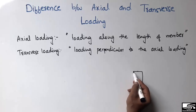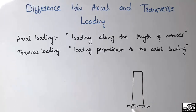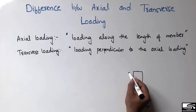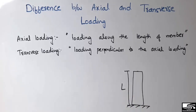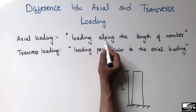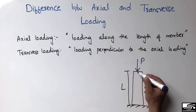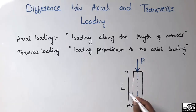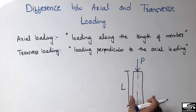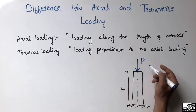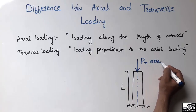Let's consider a column with a fixed support at the bottom. This is the length of the column. When the load acts along the length of the member — along the axis of the member — for example a load P acting along the axis, we call this type of loading axial loading.